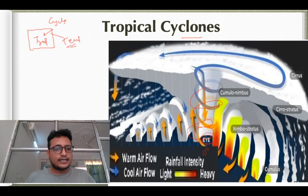Tropical cyclones form in the tropical region, which is between 0 degree and 23.5 degrees north-south latitude. But tropical cyclones do not form right at the equator.